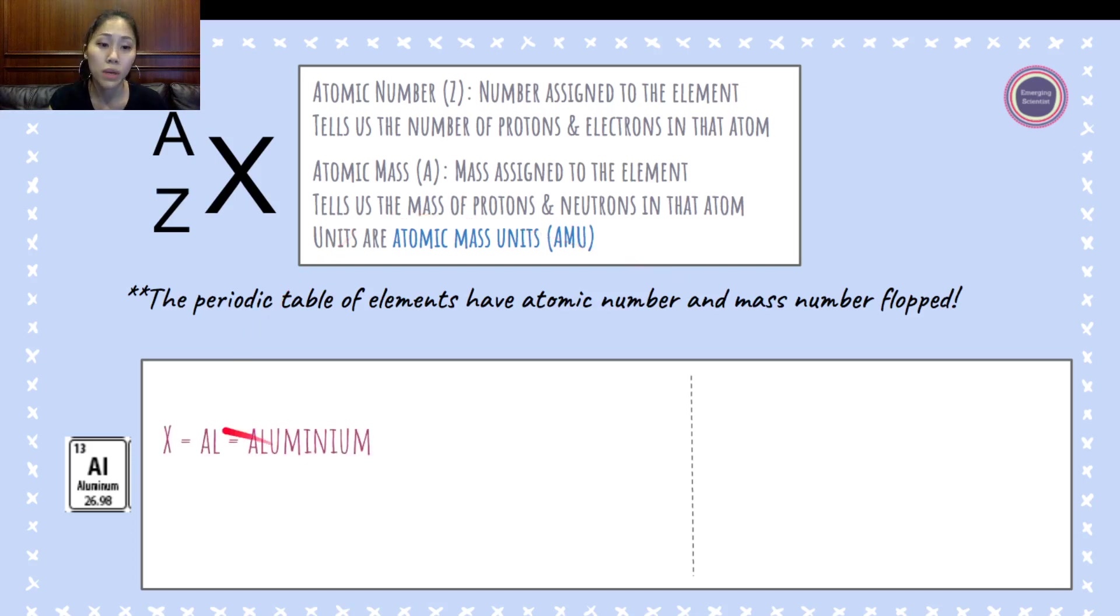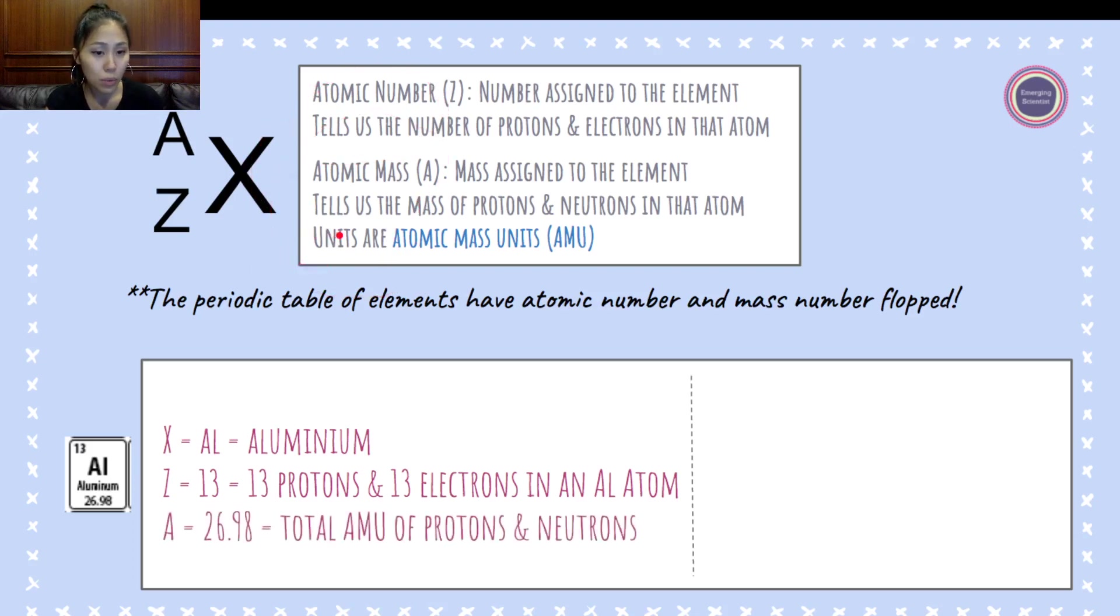We know aluminum. The X here is Al. We know the mass number, A, is 26.98, so that's the mass number. We know the atomic number on the top left-hand corner, that one is 13.